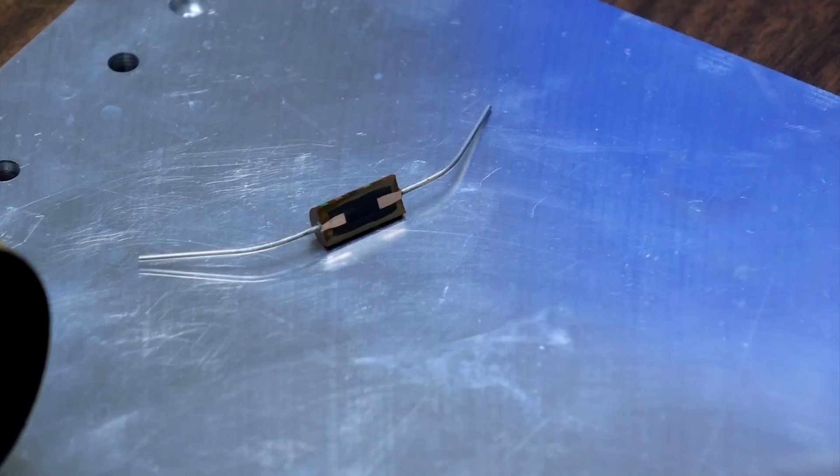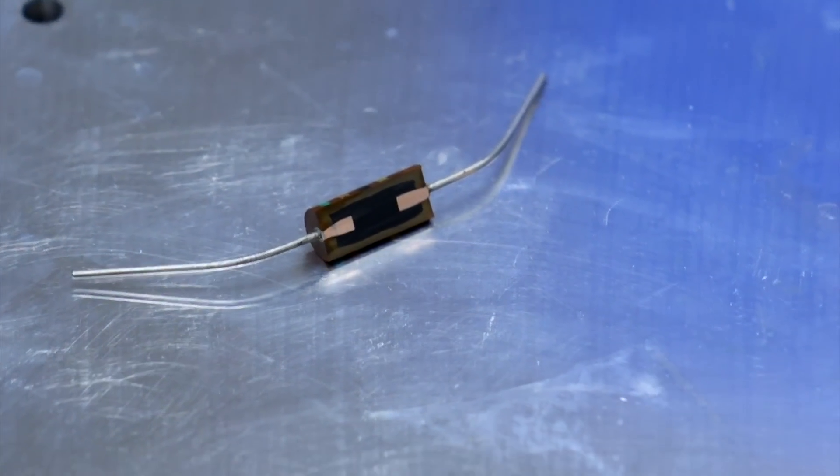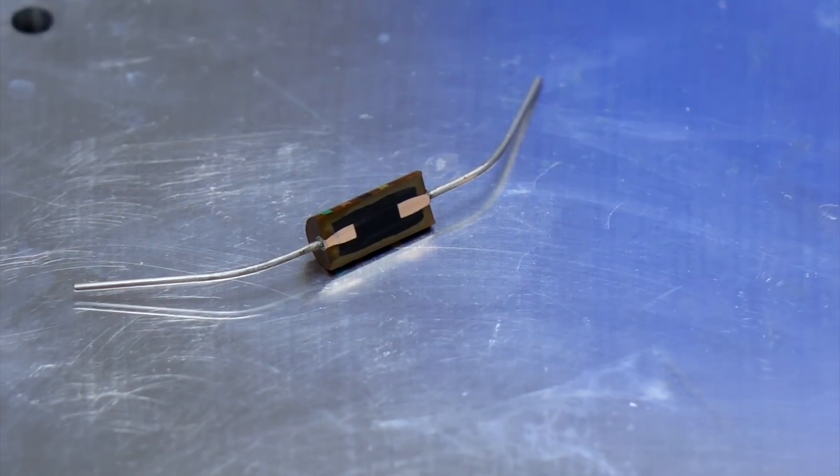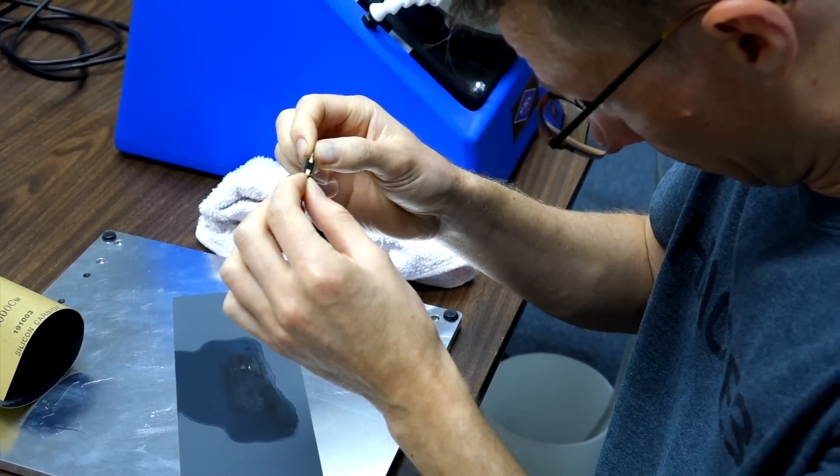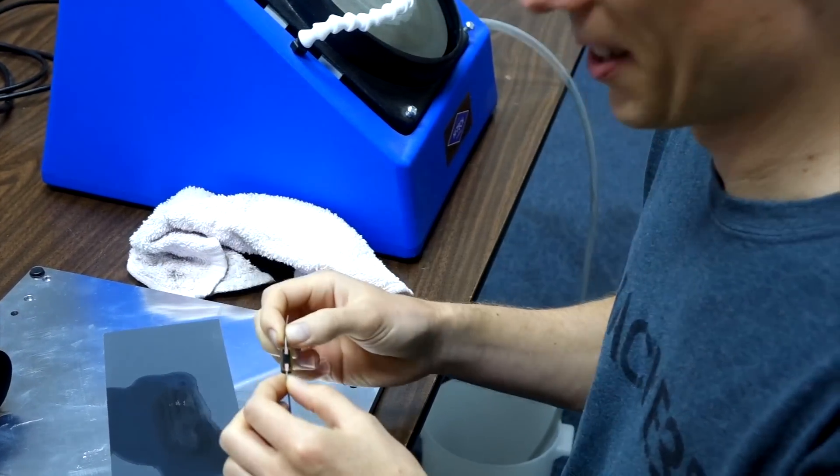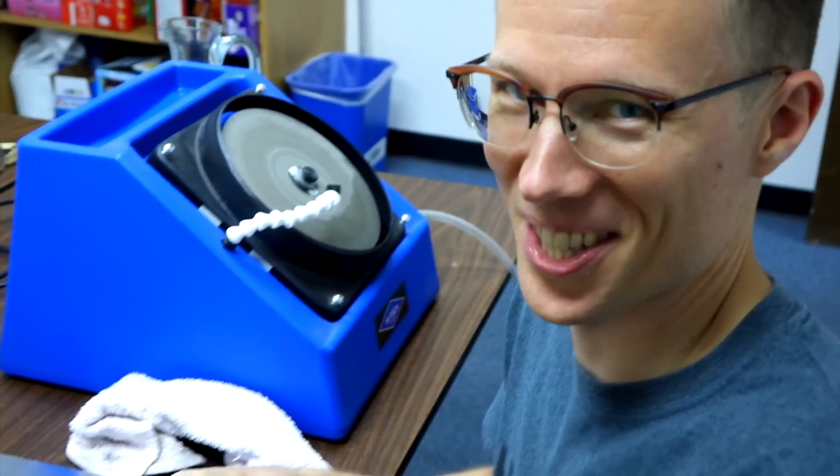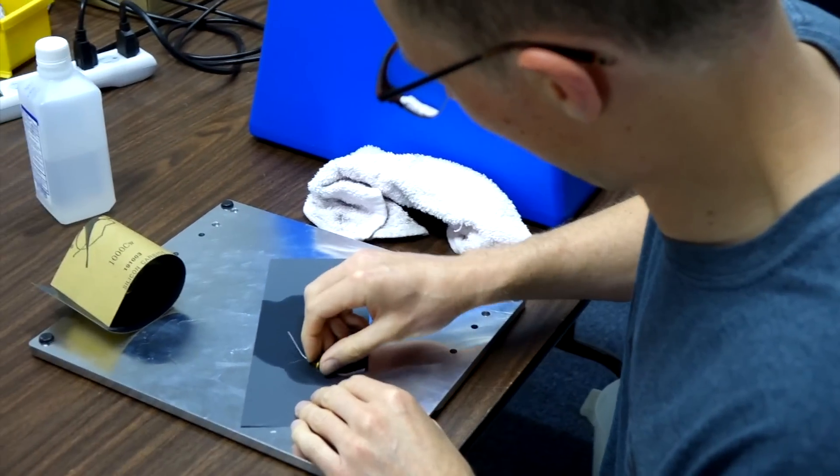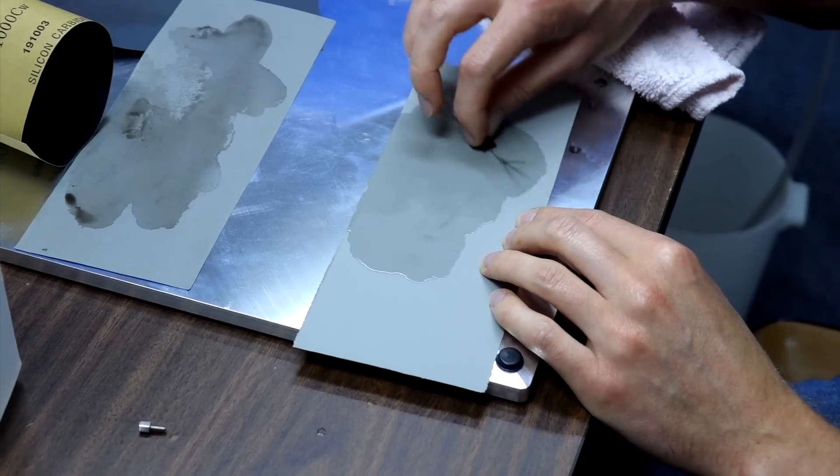And then we're going to go finer grit. Next one will probably go 2500 and then we'll go up from there. The book all together, how long have you been working on it? Ever since 2019. So three years of polishing. This is 7000 grit.